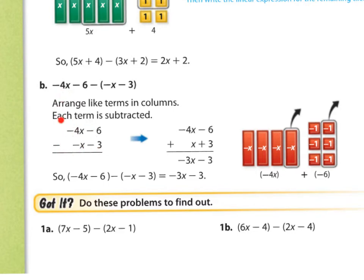We can write them vertically, so that you have it written like this: 4x minus 6 minus negative x minus 3. What you can always do is change the approach.